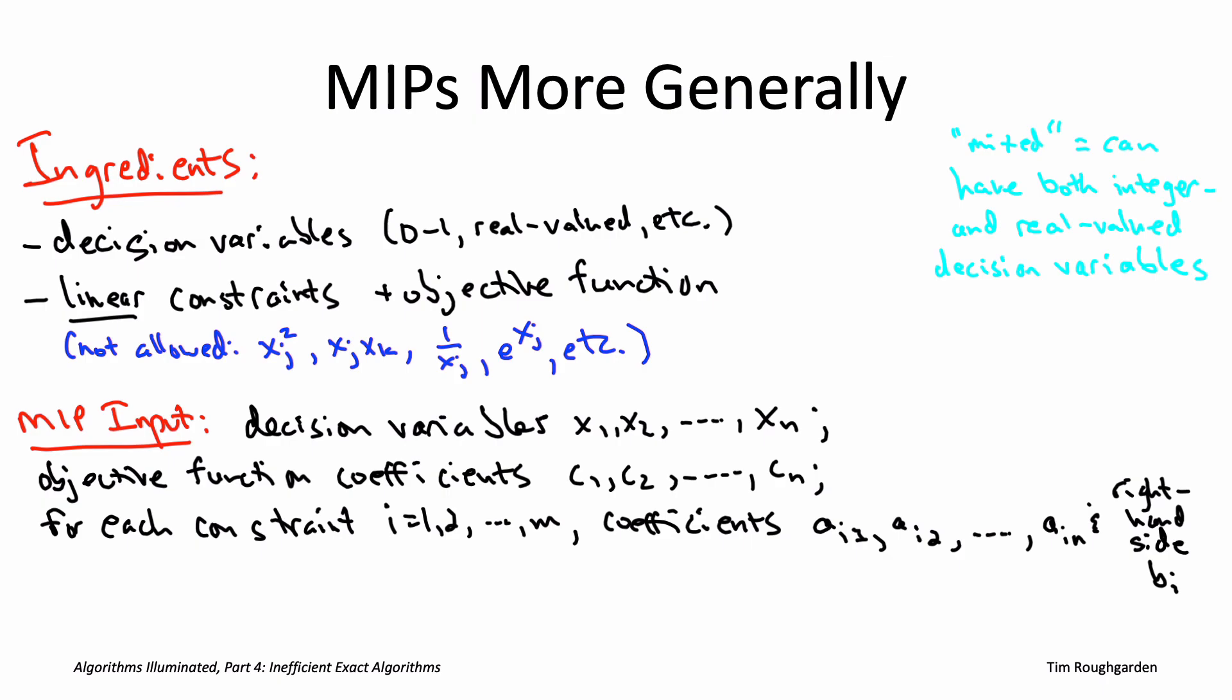So a generic mixed integer program, this is what you get. You're told what the decision variables are and which values they're allowed to take on. You're told a linear objective function value through the coefficients, and then you're told some number M of constraints, again, linear, again, specified via their coefficients.